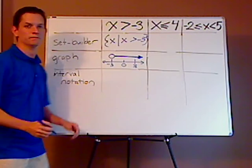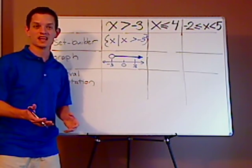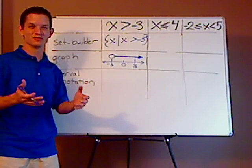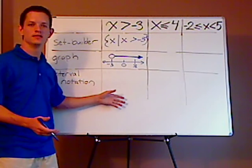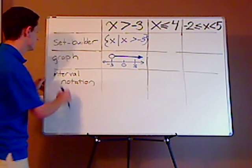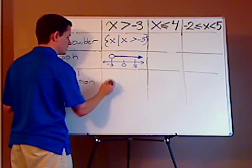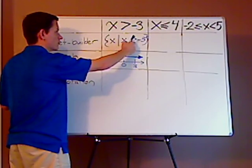Now once you graph it, interval notation is really just a piece of cake. So if you're having trouble, how do I set up interval notation? Well, first graph it, and then you have interval notation. So it's starting at negative three. Now it's an open circle because this is not or equal to, and it's not included.